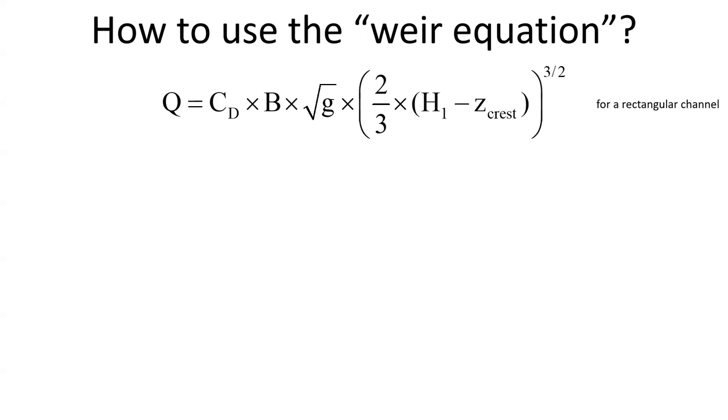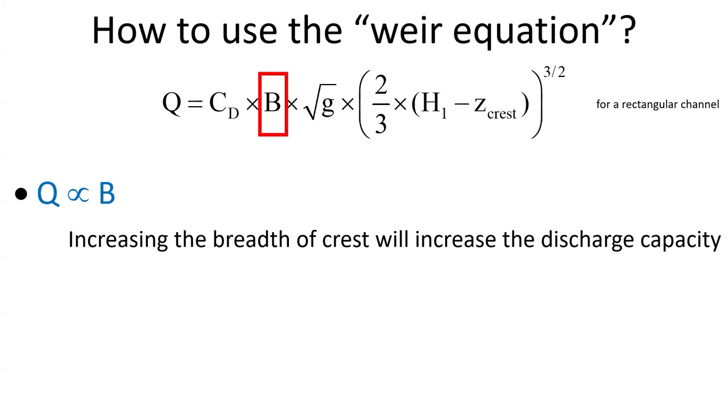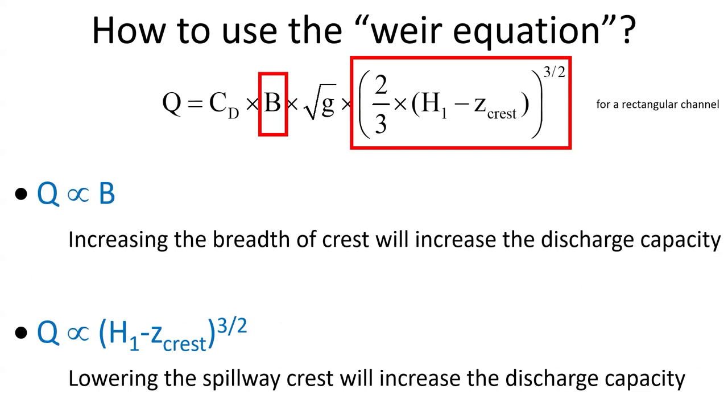How do we use this equation? For example, we may use this expression for a rectangular channel. First, the Weir Equation shows that the volumetric discharge is proportional to the breadth of the crest. When possible, if we need to increase the discharge capacity, we can increase the total breadth of the crest.